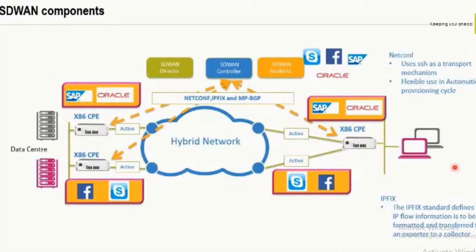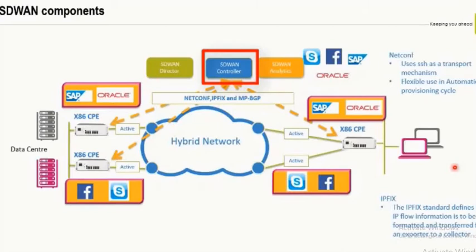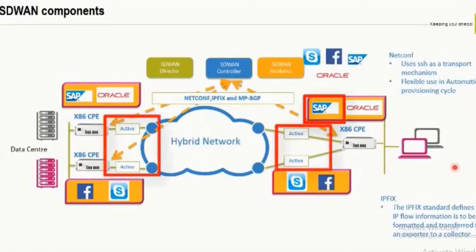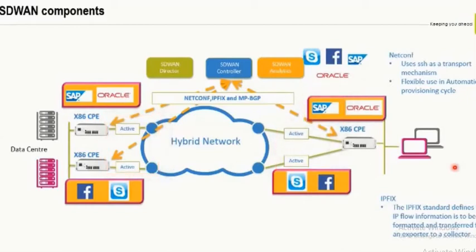On the diagram, the brown dotted lines always connect to the controller because the controller is the single entry point for any control communication. To reiterate: the controller is never used for data forwarding. If a spoke location wants to access a SAP server, the data path uses the hybrid network data path alone — shown as the green active-active line — which is purely underlay network: SIFI MPLS, internet, and any other third-party MPLS or internet provider.